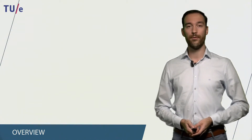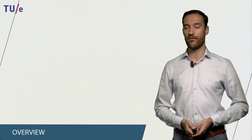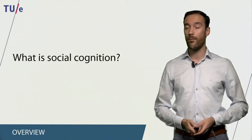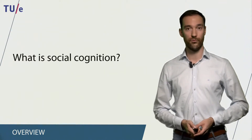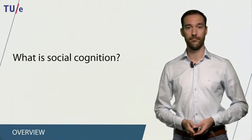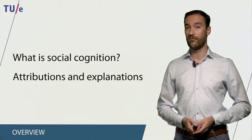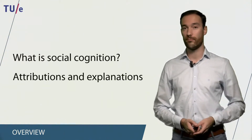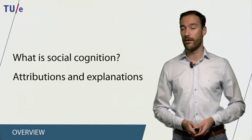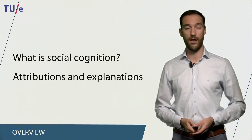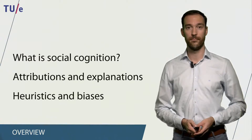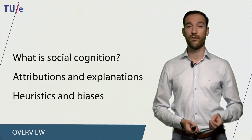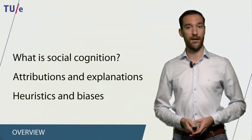This web lecture is split up in three different sections. In the first section, I will answer the question: what is social cognition? In the second section, I will use attributions and causal explanations people give to their own and others' behavior. Finally, I will explain the differences between heuristics and biases.